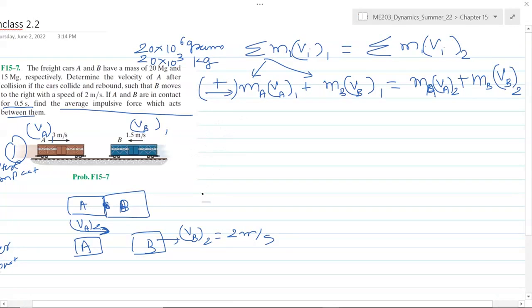Let's substitute the numbers here. m_A is 20 times 10^3 kg multiplied by 3, positive because it's going right. m_B is 15 times 10^3 multiplied by minus 1.5, negative because it's going in the left direction and we have assumed going right is positive.